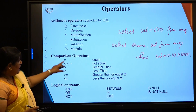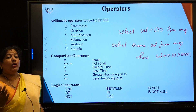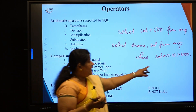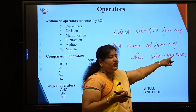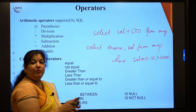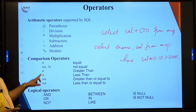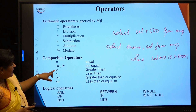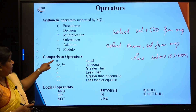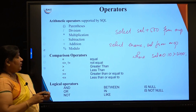Similarly, we have comparison operators. When I want to compare two values, comparison operators include: greater than, less than, greater than or equal to, less than or equal to, equal to, and not equal. Not equal can be written in both ways.